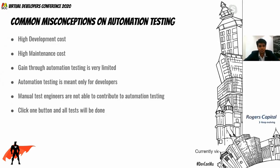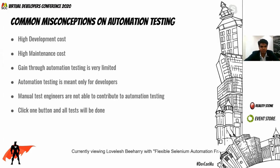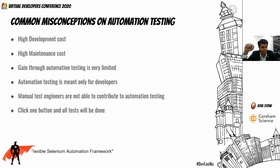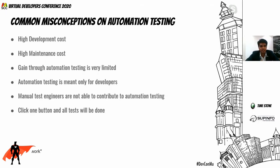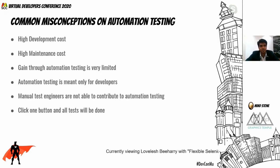Automation testing being made only for developers is not true. It does require some programming skill, but the mindset of a QA is very important. For a developer, the software is working unless proved otherwise; but for a QA, the software is not working unless proved otherwise. This plays a very important role in designing the right automation framework. It's not only meant for developers — they can help build it, but it's not exclusively theirs.